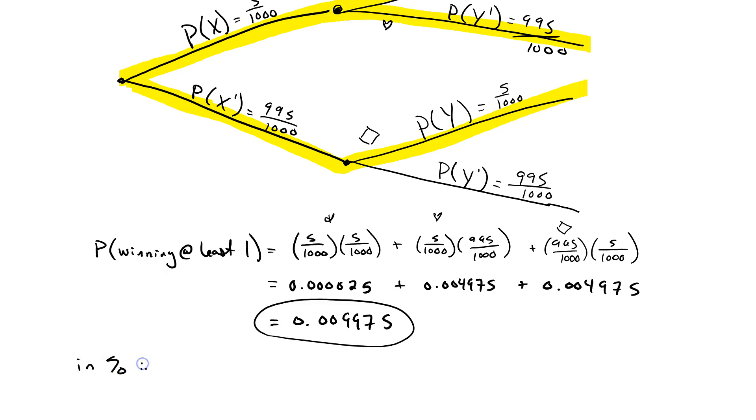So, this right here is in decimal form. In percent, we want to multiply by 100. So, it's going to be 0.9975%. But, we need to round it to the nearest tenth. And, because of the 9 beside it, that means that this goes up to 0 and 1. So, it's nearly 1.0%. This right here is our final answer.